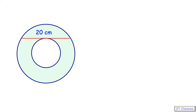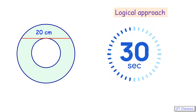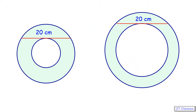Let us see how you could have solved the same question with a logical approach in 30 seconds. In the question, only the length of the chord is given — nothing about the inner circle or outer circle radius. So if we increase the radius of the outer circle, the inner circle radius will also increase, and the shaded region will remain the same. In both cases the chord length is 20 cm, and in both cases the area of the shaded region will remain the same.